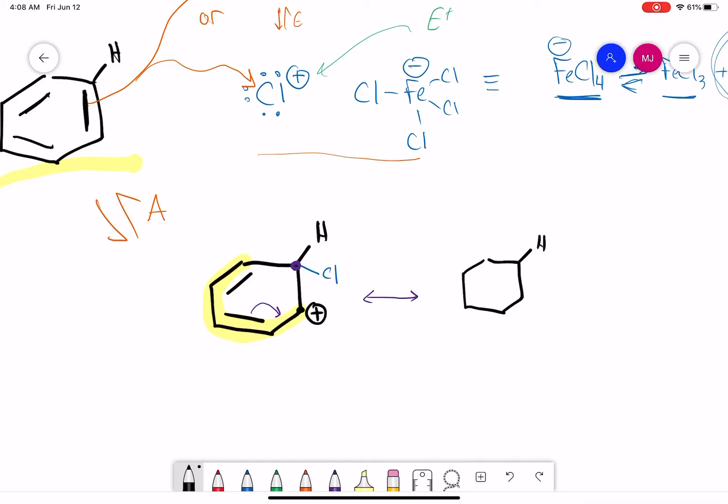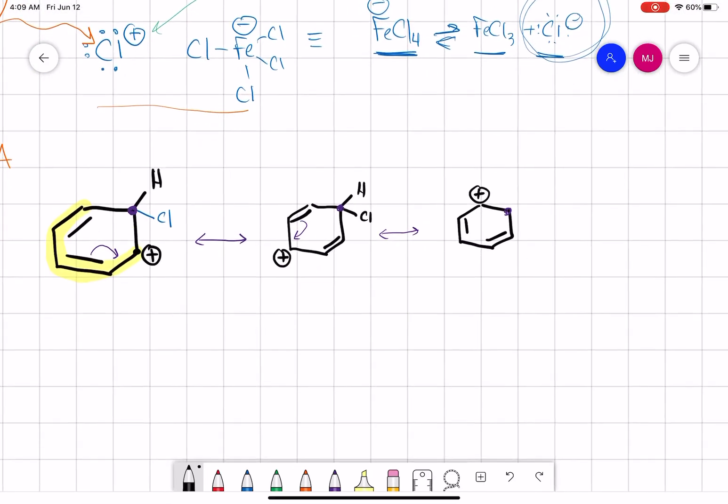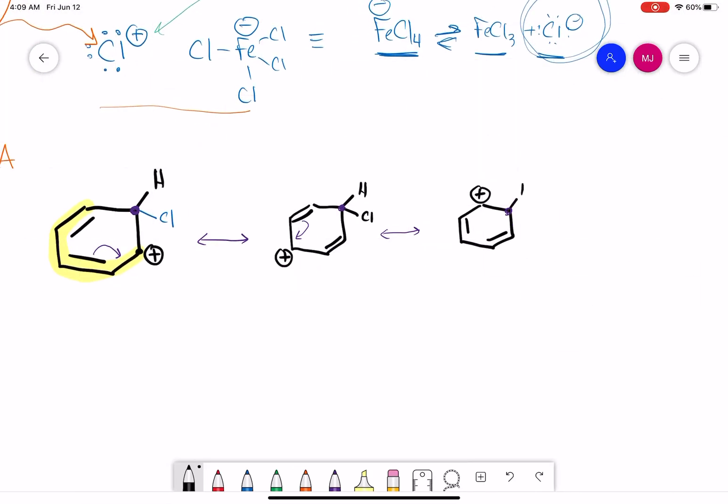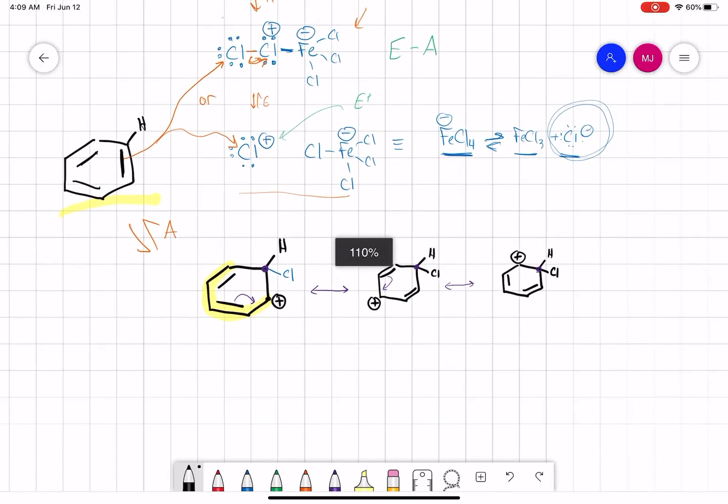So we'll still draw our H and our Cl. The double bond can be here, plus there. Or we can move our double bond here, or we can move our double bond here to draw our other resonance structure. Notice this carbon in purple here can never have a double bond or a positive charge because it is sp3 hybridized. So that always has an H and a Cl. So we have three resonance structures we can draw.